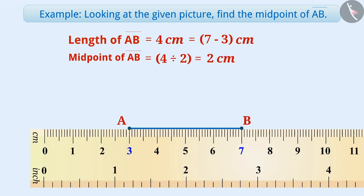To identify the midpoint, we will measure 2 cm on the right of A. We reach at 5 cm. We will mark this as P. This is the midpoint of AB.